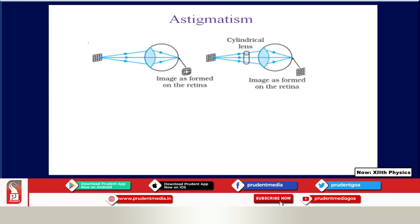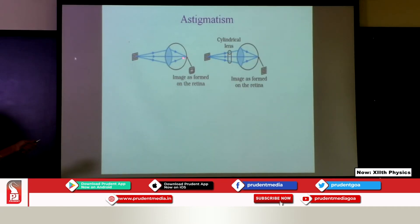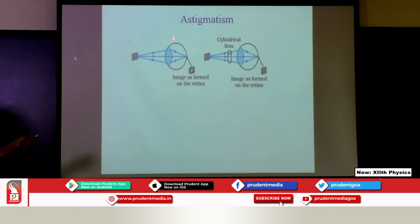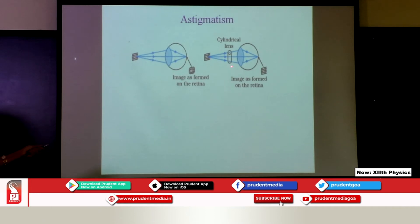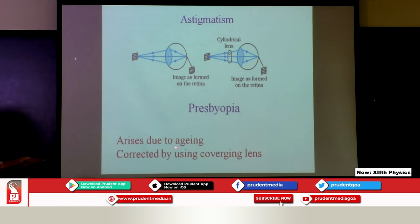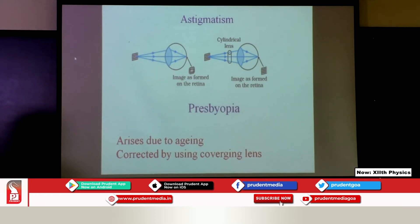In astigmatism, the image forms on the retina but is distorted. A person suffering from this defect cannot focus on horizontal and vertical lines simultaneously — if he sees a wire mesh it appears distorted. This is corrected by using a cylindrical lens. Next is presbyopia, which arises due to aging and is corrected by a converging lens. These are the defects which occur in the eye.